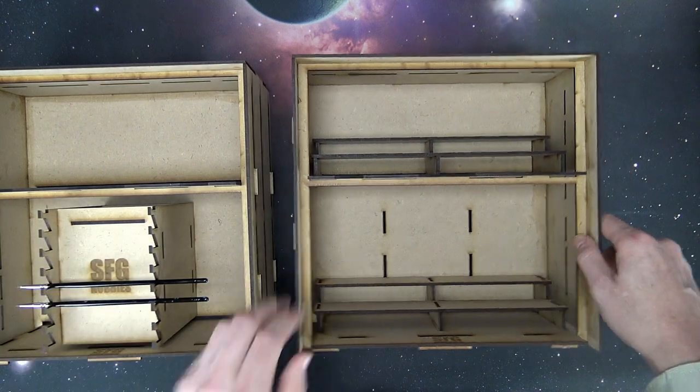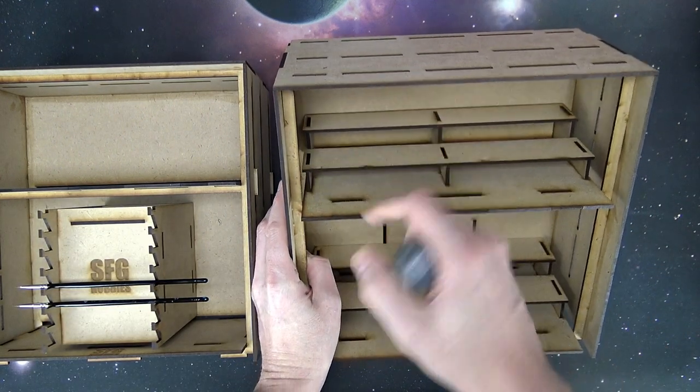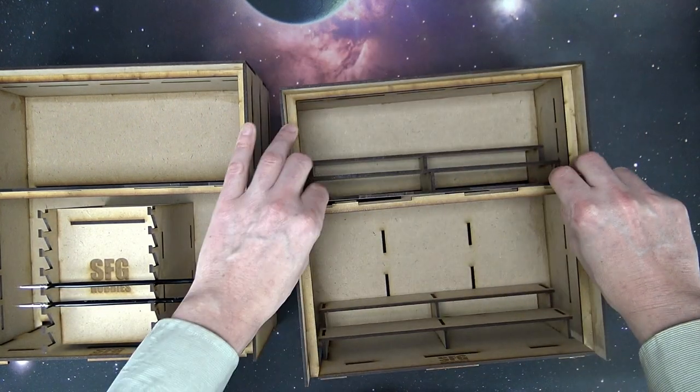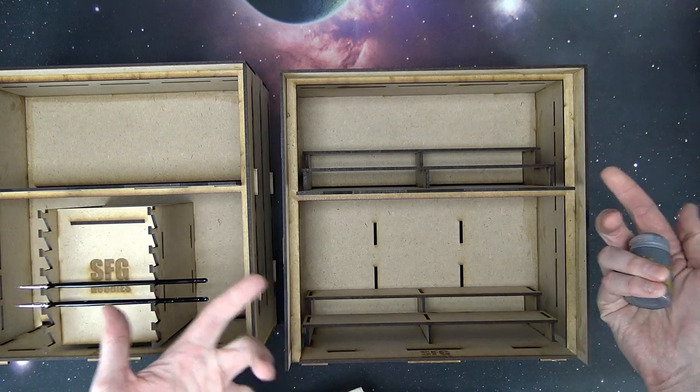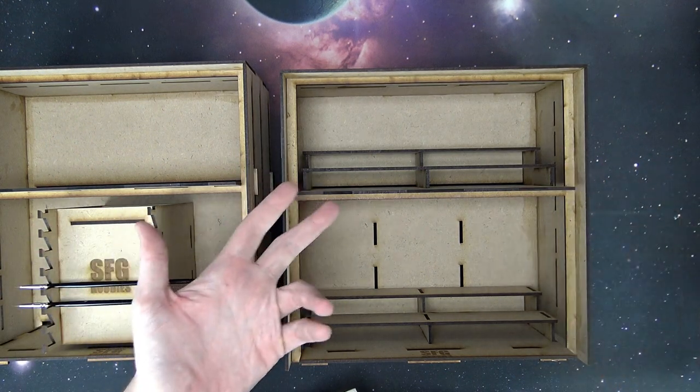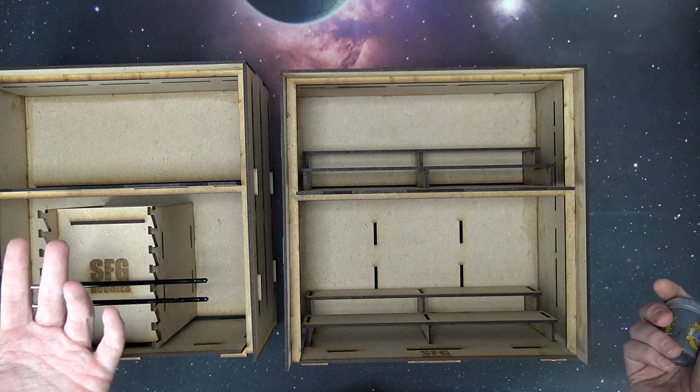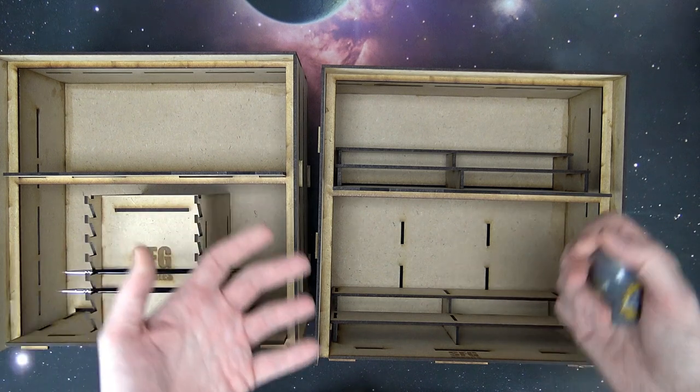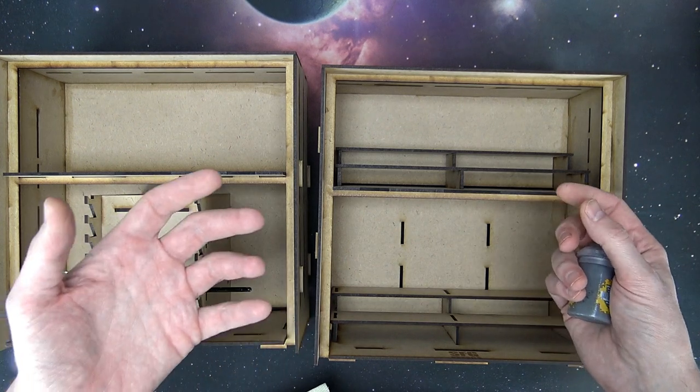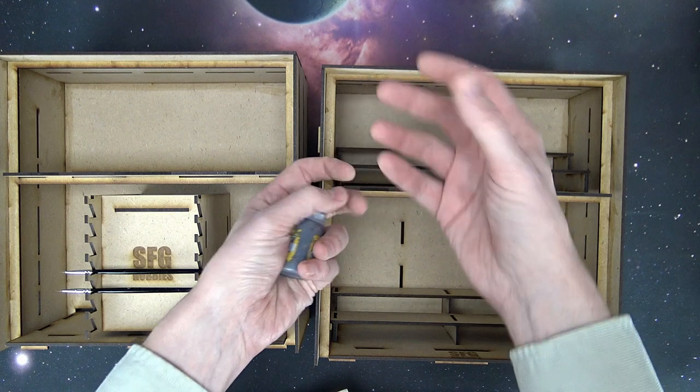Up here you can put crazy stuff, like maybe your water pot, maybe some glass beads for mixing things. Maybe empty paint bottles, what have you. It's all sorts of spots up here. Maybe some of your brush cleaners and stuff can go up there, whatever.